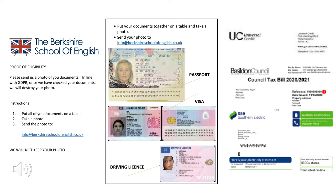The best way to do this is to put all of your documents on a table, like we've shown here, and take a photo. Then you can send the photo to our email address: info@berkshireschoolofenglish.co.uk. And remember, we're not going to keep your photo.